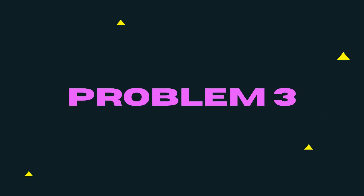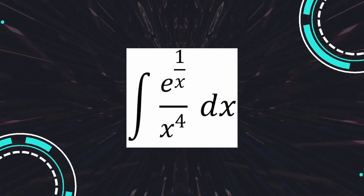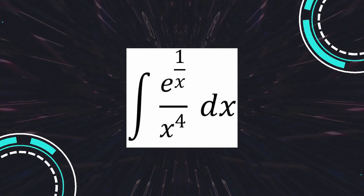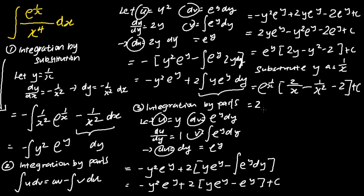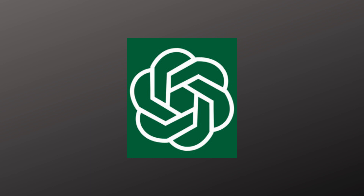The third question we will ask ChatGPT to solve is to find the integration of e to the power 1 over x, over x to the power 4 dx. This complex-looking problem requires you to first apply the integration by substitution technique, followed by applying the integration by parts technique twice in order to get the final answer. The final answer to this particular problem is 2 bracket 1 over x squared times e to the power 1 over x, bracket x minus one half minus x squared plus c.